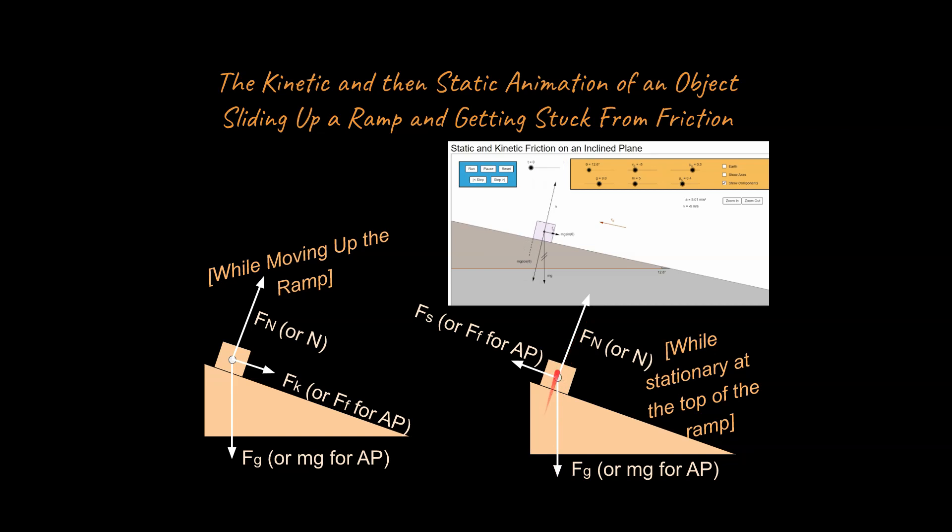so this would be the y-axis, this is going to be the x-axis right here, and we were to break this vector into components, you would see that there is a component parallel to the ramp right here. That's in the positive x-axis to the right in the x-axis.